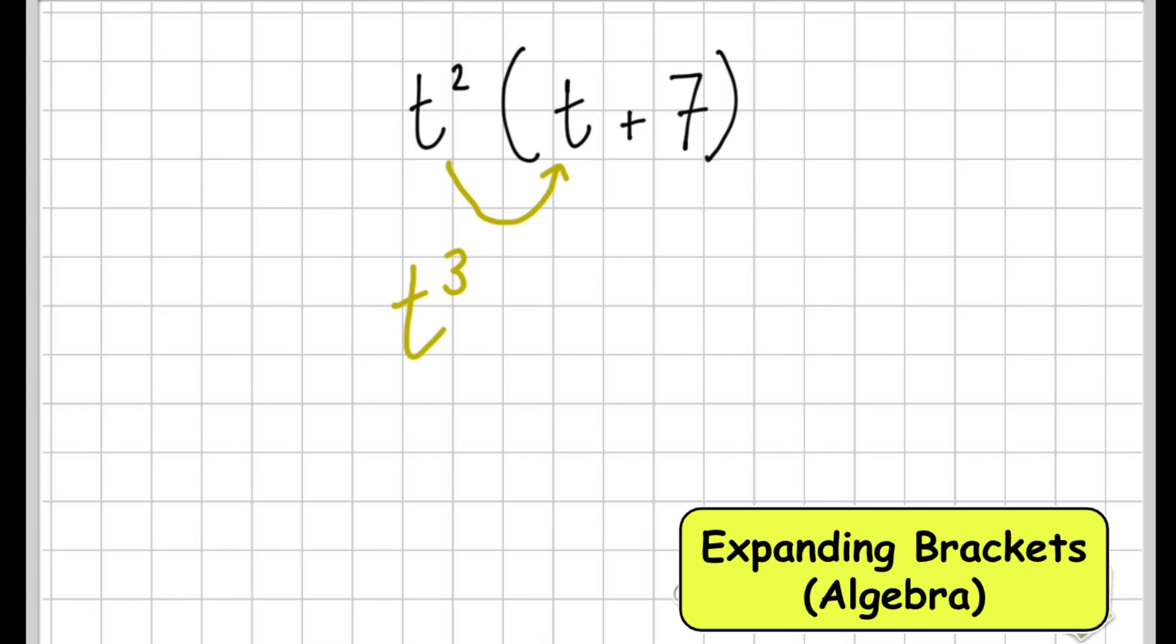And then we're going to multiply t² by 7 or plus 7. So t² plus 7 gives us plus 7t². Example 3.